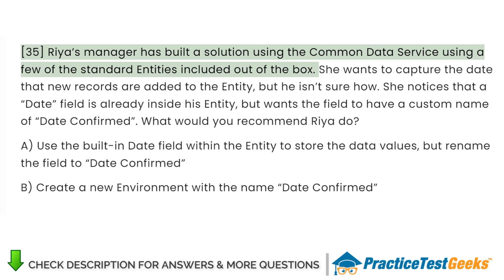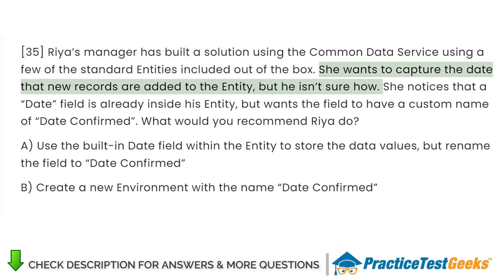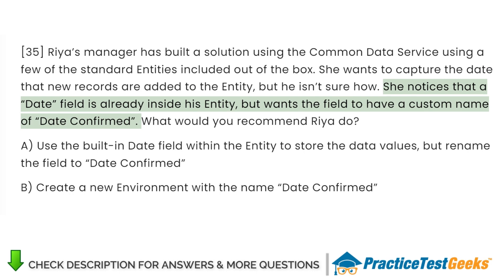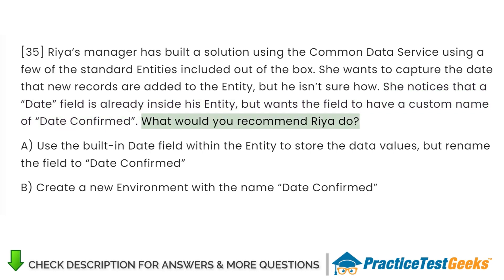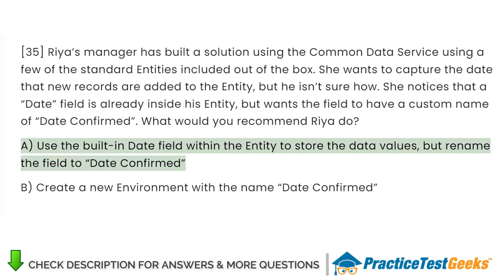Ria's manager has built a solution using the Common Data Service with a few of the standard entities included out of the box. She wants to capture the date that new records are added to the entity, but isn't sure how. She notices that a date field is already inside the entity but wants the field to have a custom name of 'date confirmed.' What would you recommend Ria do? A. Use the built-in date field within the entity to store the data values, but rename the field to 'date confirmed.'